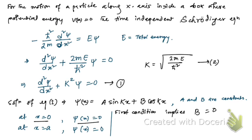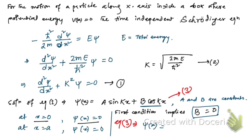With B = 0, equation (3) simplifies to ψ(x) = A sin(kx).